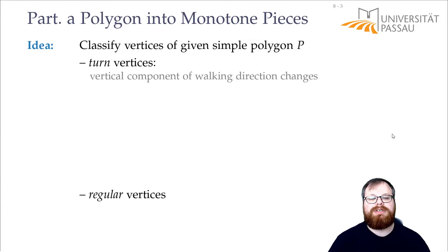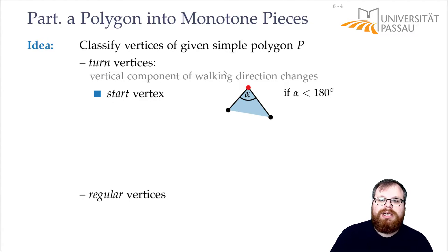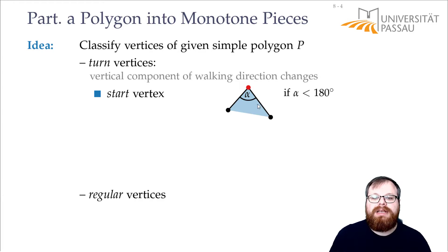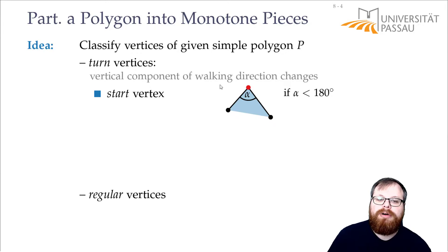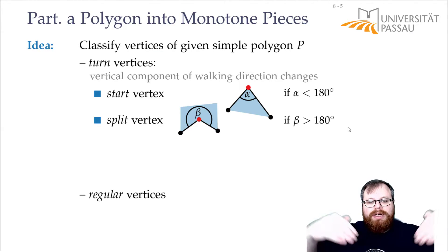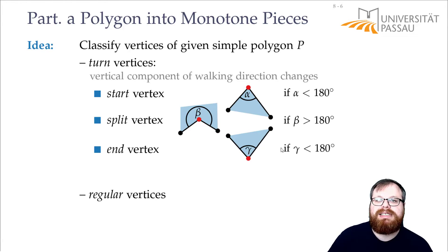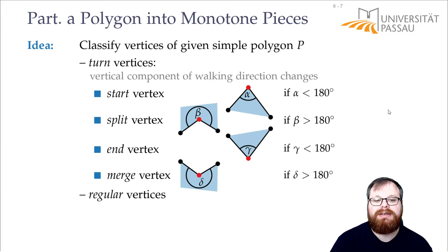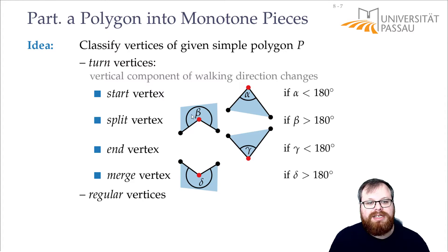There are four types of these vertices. The first one we call a start vertex. So if you walk along the polygon, you go up and then you go down, and the interior of the polygon lies below — this is a small angle. On the other hand, if you walk up and then down but the polygon lies above it, then we call this a split vertex, and here we have a large angle. And the same thing we can define for walking down and then up: we have an end vertex if the polygon lies above, and a merge vertex if the polygon lies below.